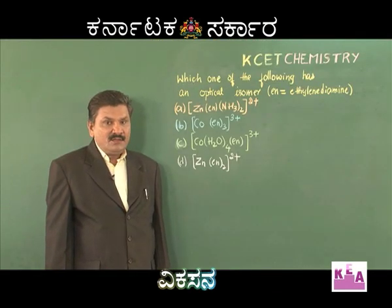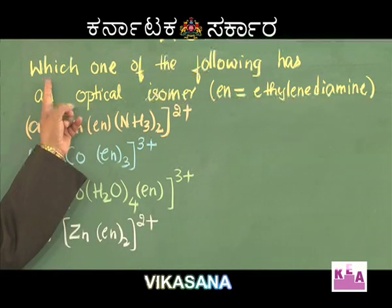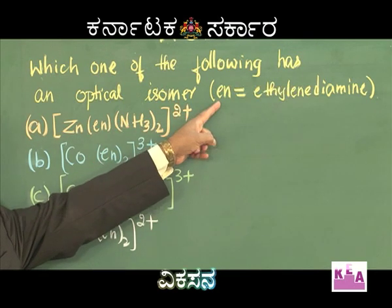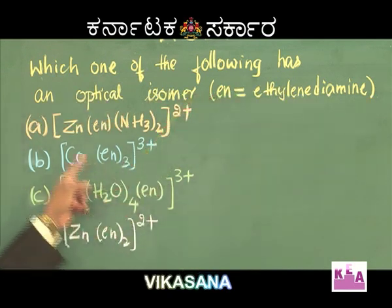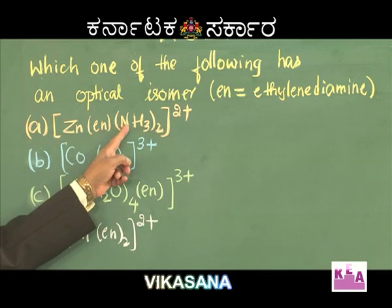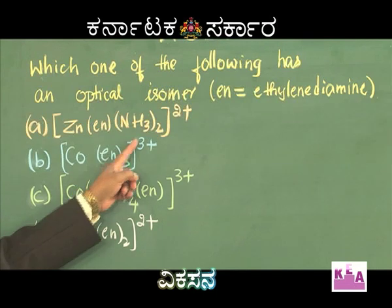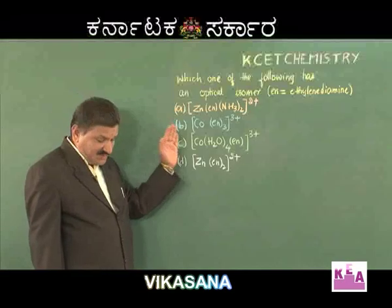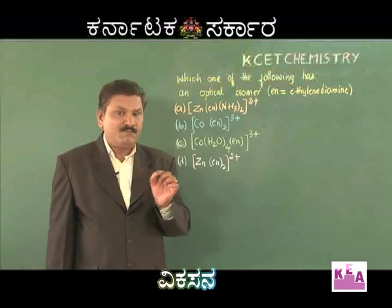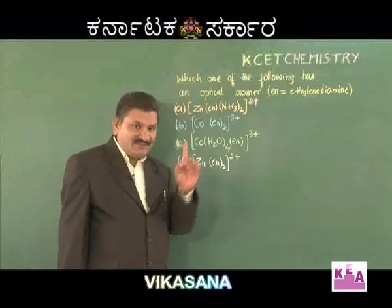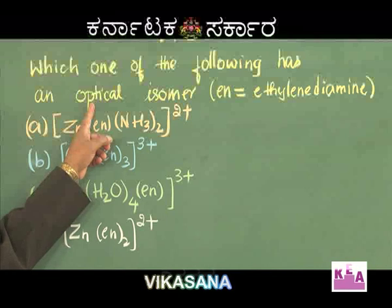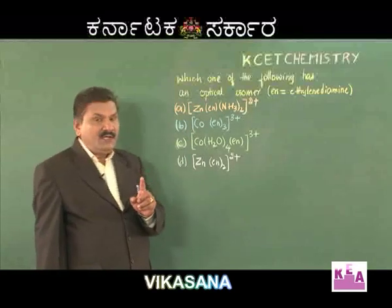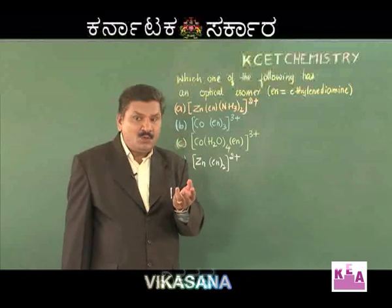Now we move to the next question on isomerism: which one of the following has an optical isomer? The complexes involve ethylenediamine (abbreviated as EN) as a ligand. There are four options. To solve this, remember a simple clue: condition 1 — the complex must have coordination number 6; condition 2 — it should have two or more bidentate ligands.